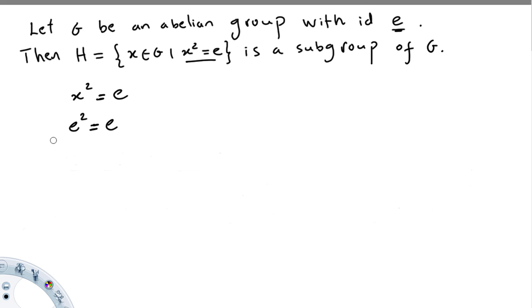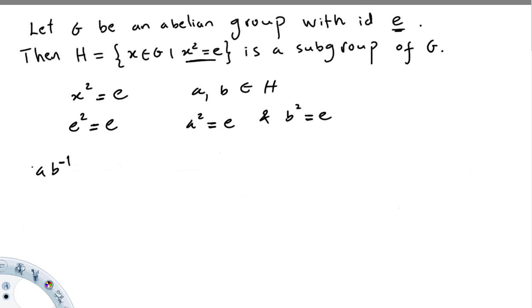We assume that a and B are in H. This means a squared equals the identity and B squared equals the identity. We must show that a times B inverse, squared, equals the identity. If this holds, then H will be a subgroup.